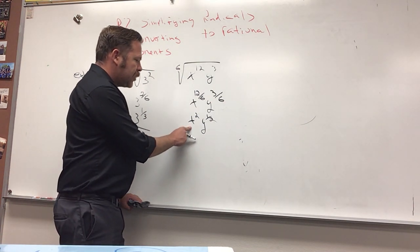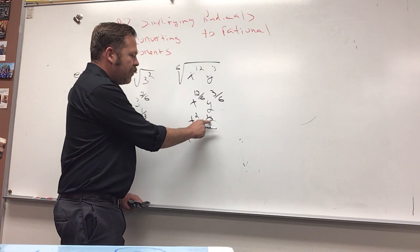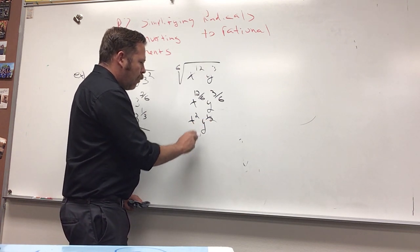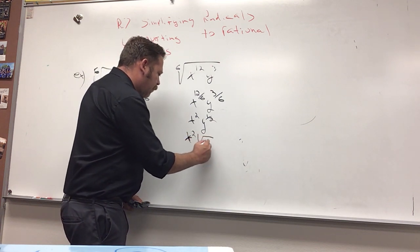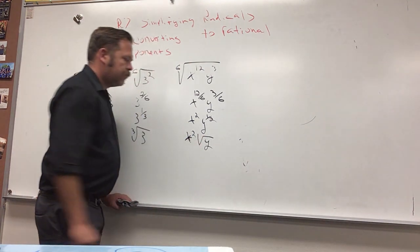Now, x squared, I love, that's simplified. x squared is simplified. But this can be written as a radical, a square root. y to the 1 half would be the same thing as the square root of y. So, I have x squared times the square root of y. Simplified.